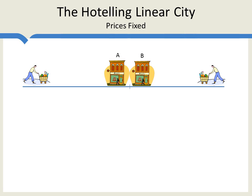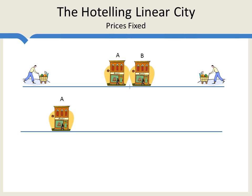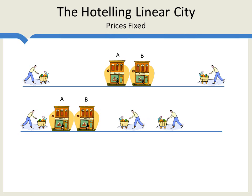Why is this the case? The easiest way to show that this is the equilibrium is to show that any other possibility cannot be in equilibrium. Suppose that firm A were to locate off-center. What would firm B do? By locating next to firm A, firm B can grab up more than 50% of the market. In this situation, firm A will get everyone to the left, which is a small portion, and firm B will get everyone to the right, which is a majority of the market. Firm A will get less than half the market if A chooses to locate off-center.